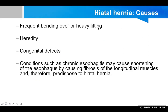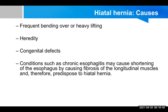Additional contributing factors include frequent bending over or heavy lifting, hereditary causes as it may run in the family, and congenital defects of the diaphragm. Conditions such as chronic esophagitis, which causes shortening of the esophagus through fibrosis of the longitudinal muscles, also predispose to hiatal hernia. A cause of chronic esophagitis is GERD itself — gastroesophageal reflux disease causing reflux esophagitis. Because of this fibrosis, the intra-abdominal esophagus is pulled up towards the thoracic cavity, and the lower esophageal sphincter can no longer maintain its function, resembling hiatal hernia.